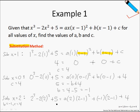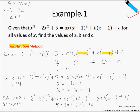Simplifying using a calculator, we get 5 equals 2a plus negative 1 plus 4, which gives 5 equals 2a plus 3. Shifting 3 to the left: 5 minus 3 equals 2a, and dividing both sides, a equals 1. Therefore, our final answers are a equals 1, b equals negative 1, and c equals 4.